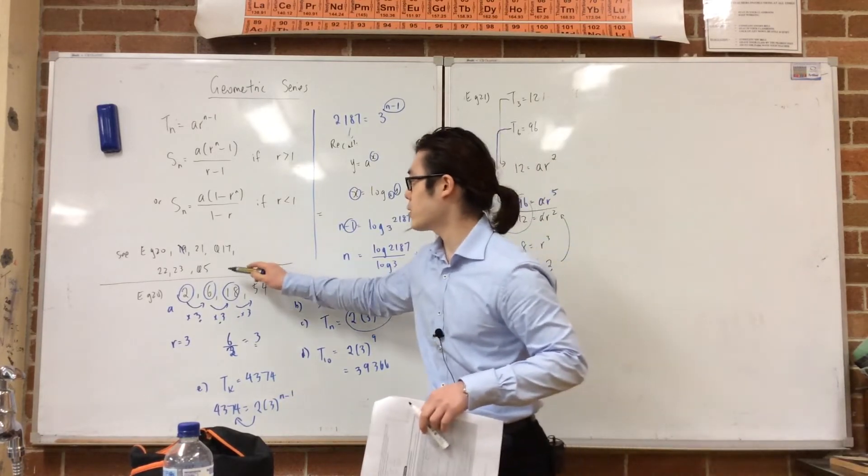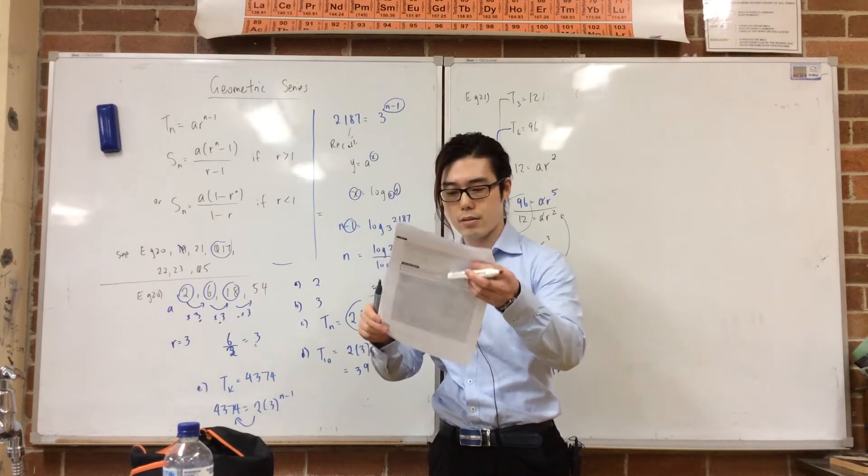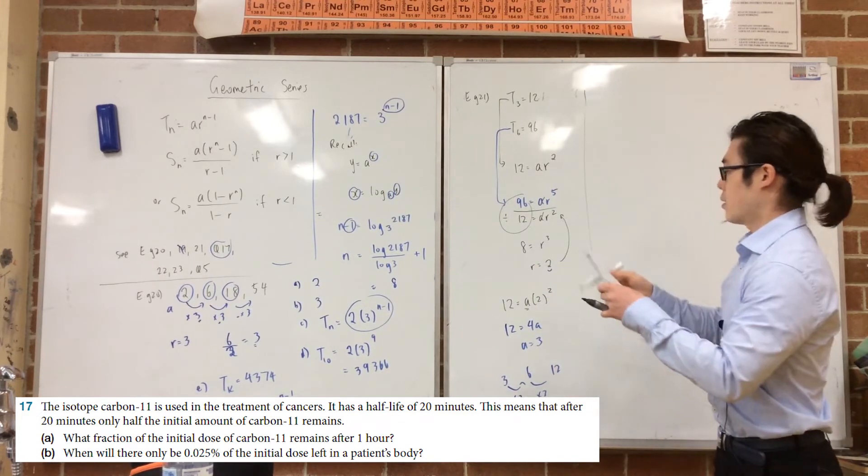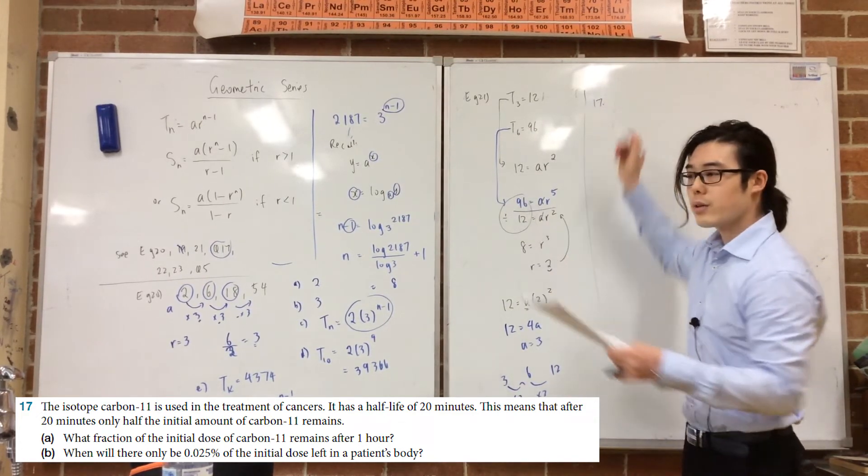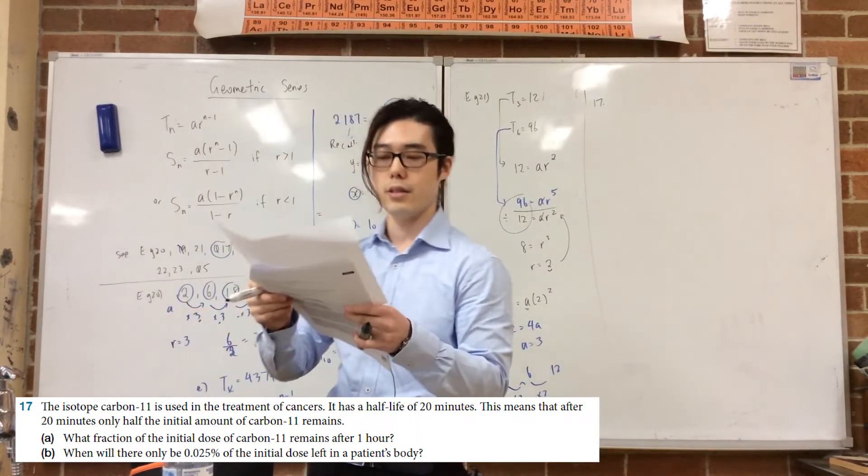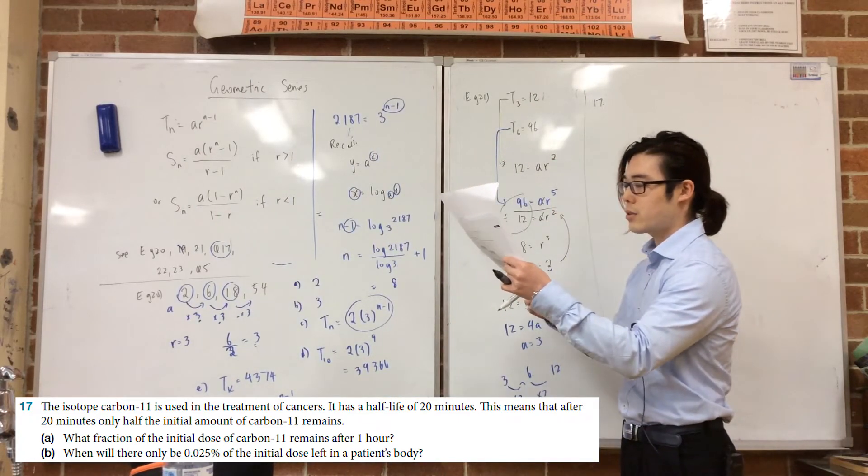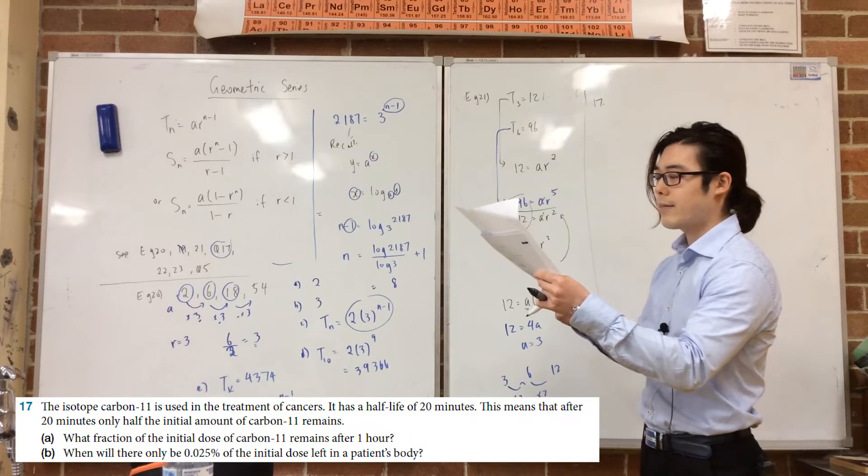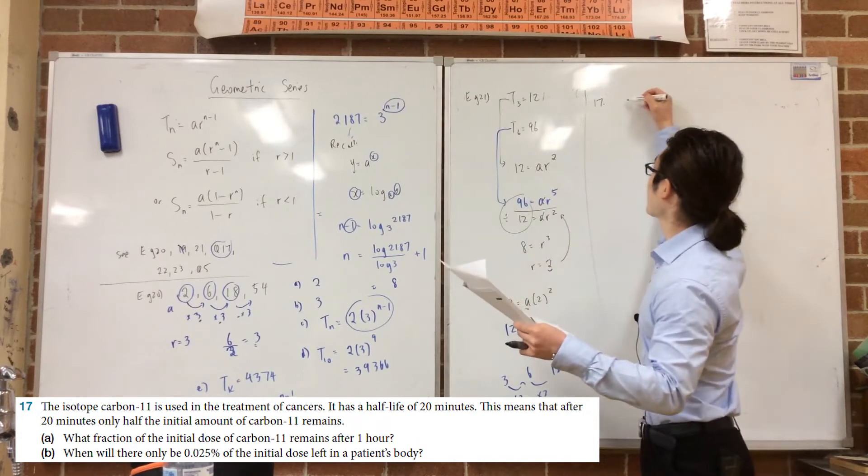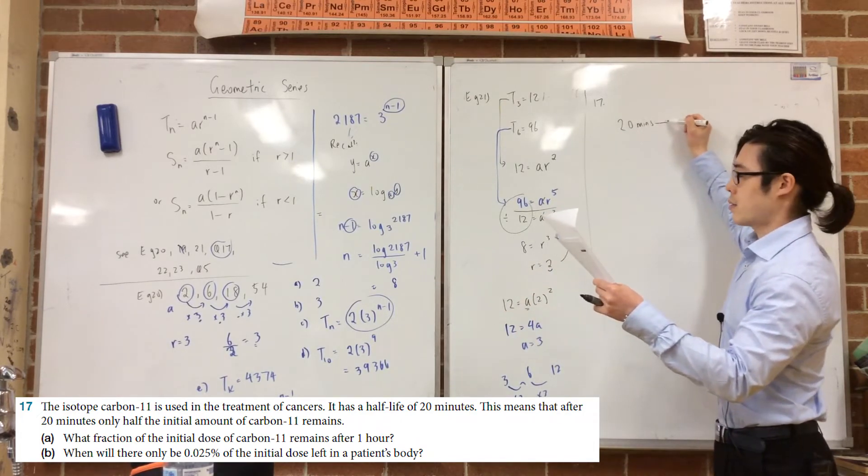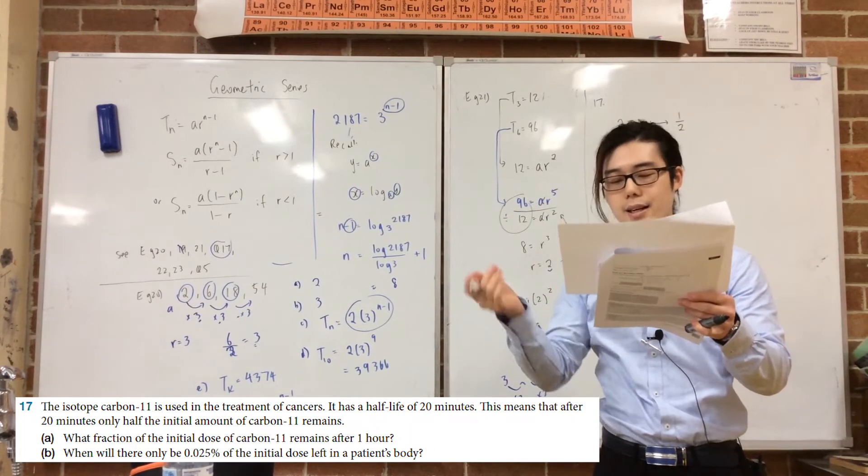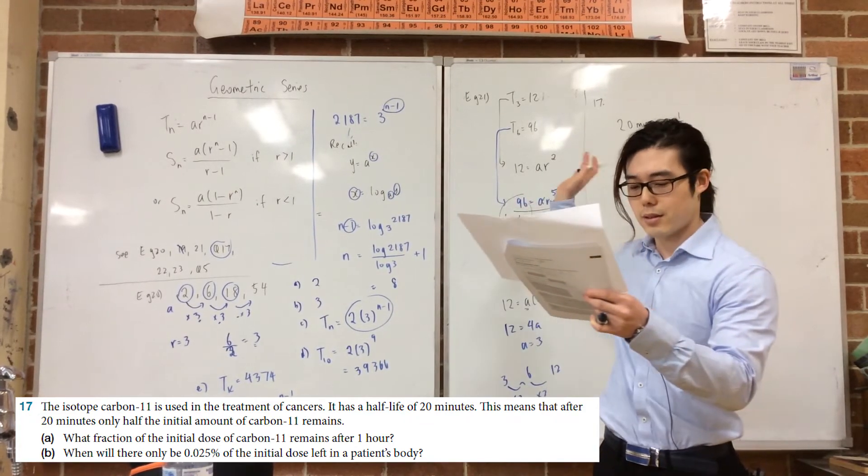Alright, let's look at a specific question. Question 17 I thought was good from your exercise. Have a look at question 17. This is a tricky question. It looks tricky. Girls, you've got to read the question carefully for this. Please pay attention. Girls, the isotope carbon-11 is used for treatment of cancers. It has a half-life of 20 minutes. So girls, here's an important fact right there. If it says half-life of 20 minutes, that means after 20 minutes, there's only half of the remaining amount. The next line says this means that after 20 minutes, there's only half the initial amount. So that's what it is.